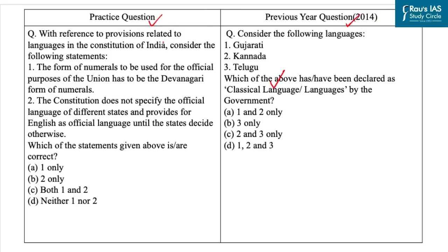Now let's come to the practice question. With reference to provisions related to languages in the Constitution of India, the first statement is: the form of numerals to be used for the official purposes of the union has to be the Devanagari form of numerals. According to Article 343, Hindi written in Devanagari script is the official language of the union, but the form of numerals for official purposes has to be the international form of numerals, not the Devanagari form. So the first statement is incorrect.